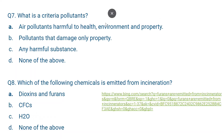Question number seven: What is a criteria pollutant? The correct answer is: air pollutants harmful to health, environment and property. Pollutants that damage only property is incorrect; 'any harmful substance' is also incorrect. Criteria pollutants are those air pollutants that cause health, environmental and property damage — such as sulfur dioxide, oxides of nitrogen, carbon monoxide, and suspended particulate matter.